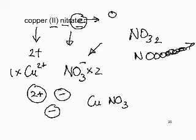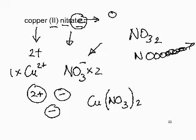Any time we multiply a compound ion by 2 or 3, we must put it in round brackets and place the number outside at the bottom right: Cu(NO₃)₂. For simple ions being multiplied, never use brackets. And if we take only one of a compound ion, we must not put it in brackets either.